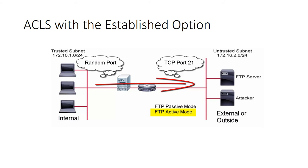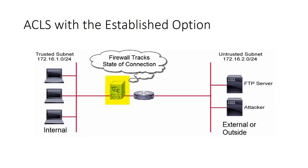However, FTP standard mode will cause an issue with the data channel. The client will specify a random port to the server through the FTP control channel. The TCP three-way handshake then begins with a TCP SYN sent from the FTP server to the client from source TCP port 20. This packet doesn't have the ACK bit set and therefore will not match the established configuration of the ACL. This case illustrates the need for a firewall which will track the state of a connection and allow both FTP standard mode and passive mode to work.